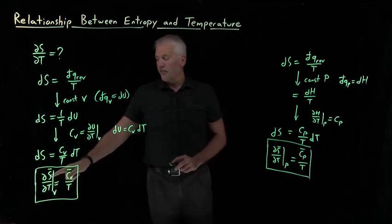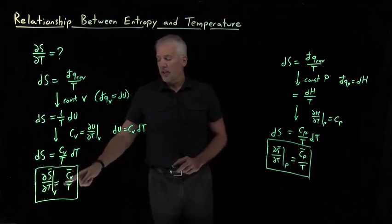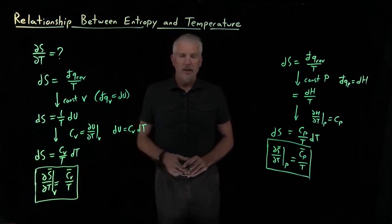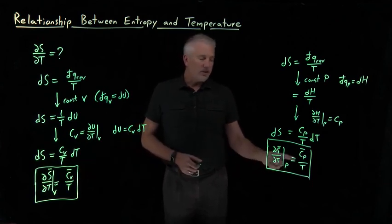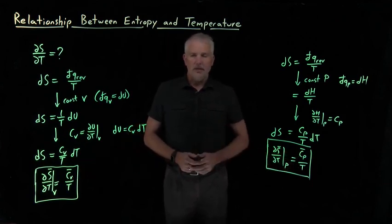If we're at constant volume, entropy changes with temperature as heat capacity over temperature, but it's the constant volume heat capacity. If we're doing it at constant pressure, it's the constant pressure heat capacity divided by temperature.